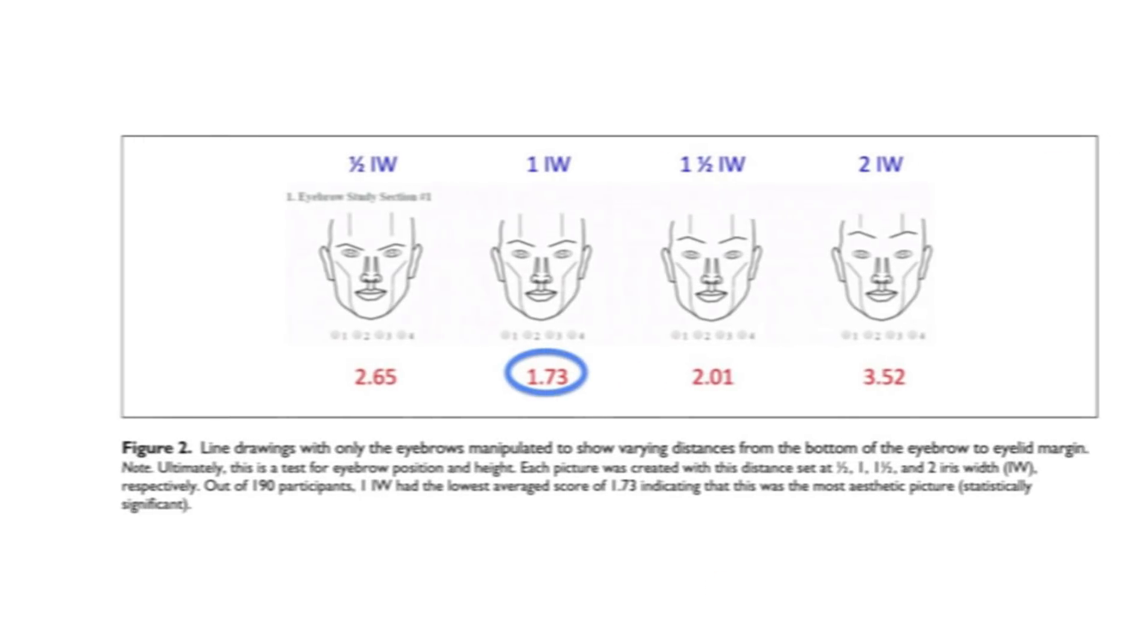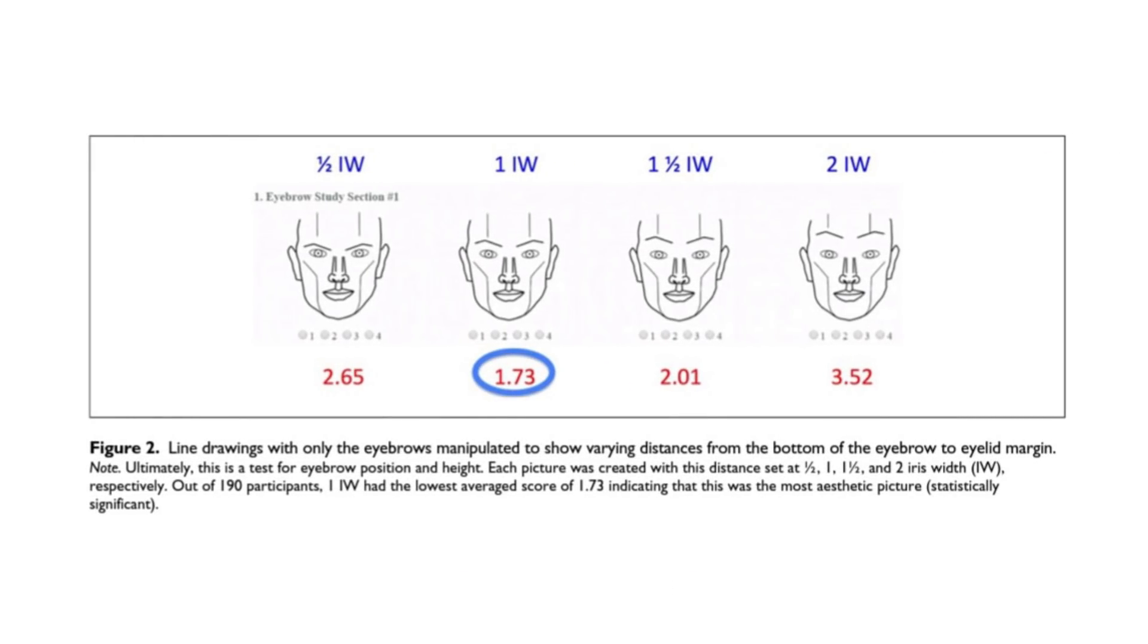A high eyebrow position of two iris widths was deemed the worst by the study group and this may be due to the rare number of people with this type of eyebrow position and additionally unpleasant emotions such as fear, surprise or shock are conveyed by a high brow position.